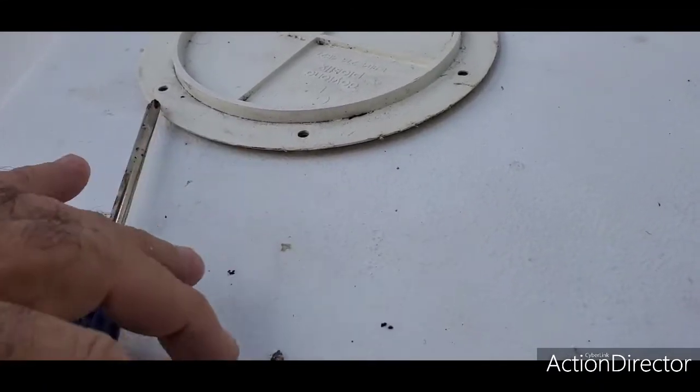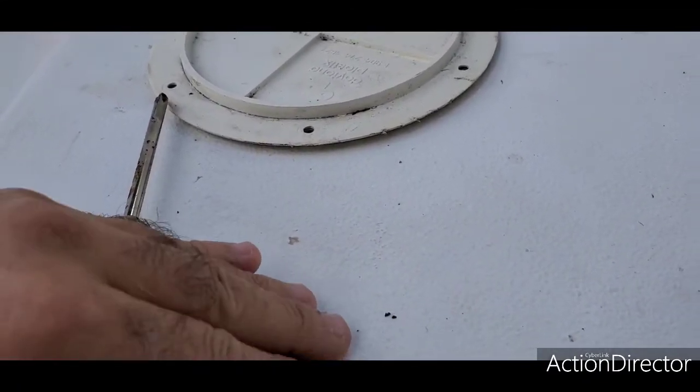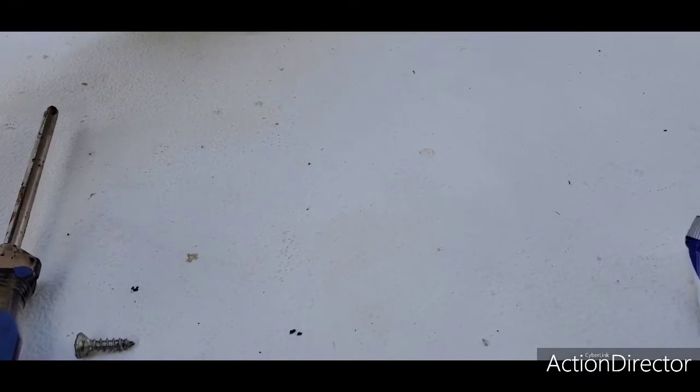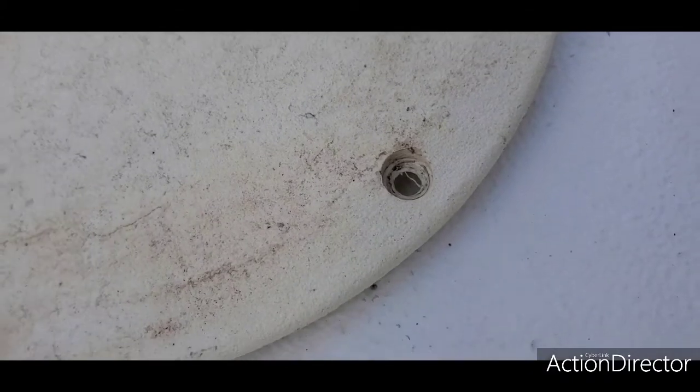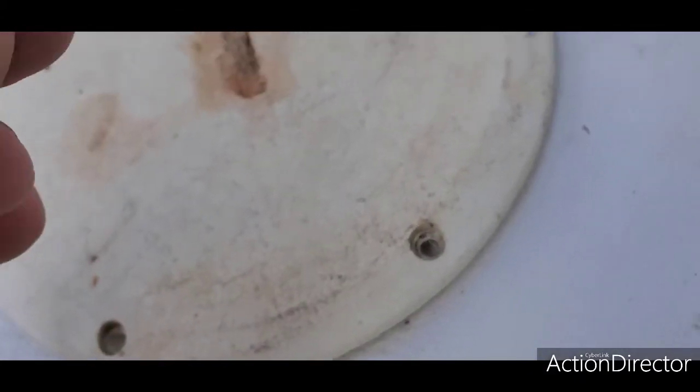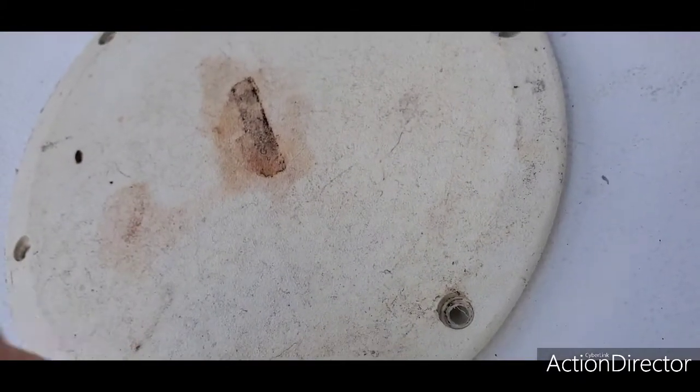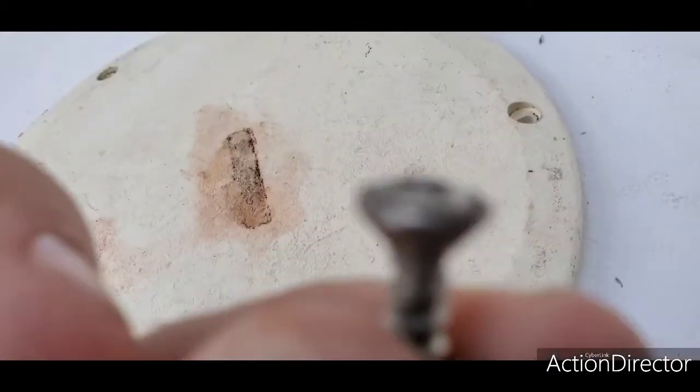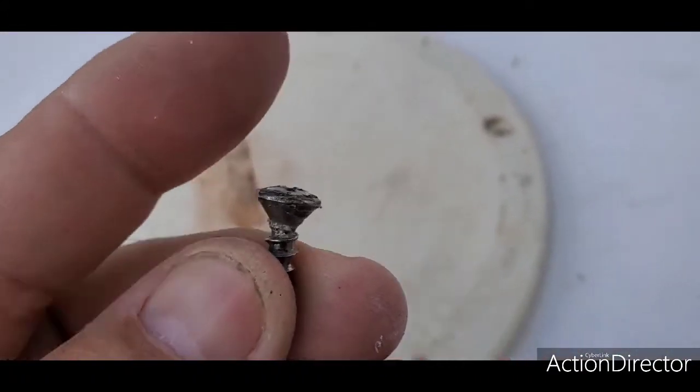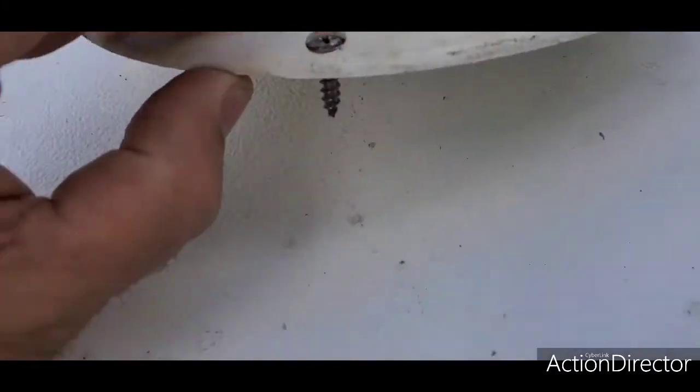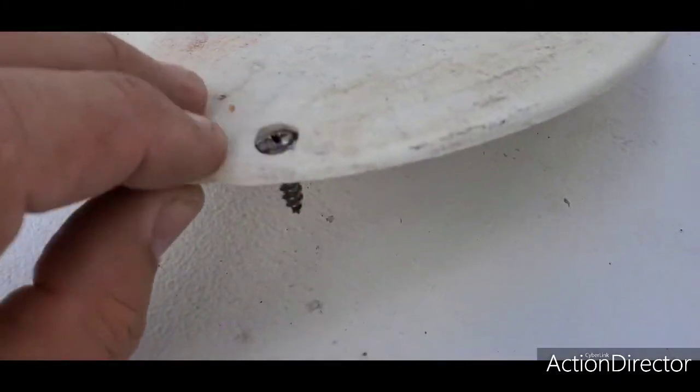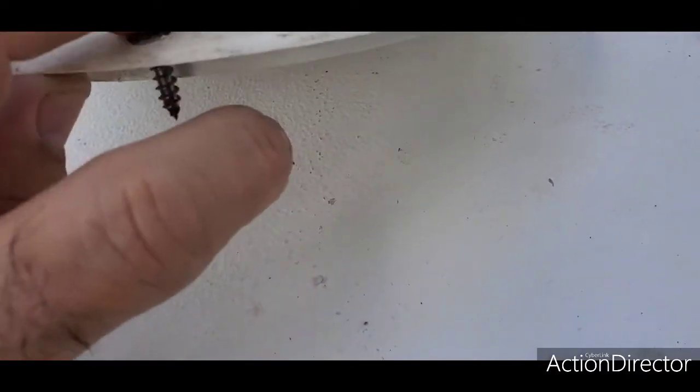When you look at the hatch, you see that it has these little grooves. The bolts you're going to use have a little cone shape, and what that does is when you put it in there, it doesn't stick out on the top. You want to use those types of screws.